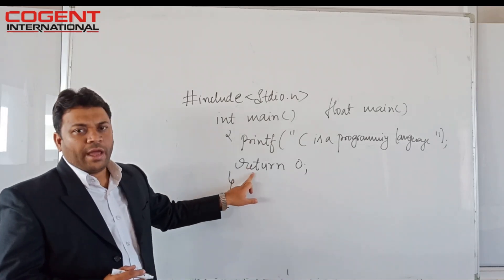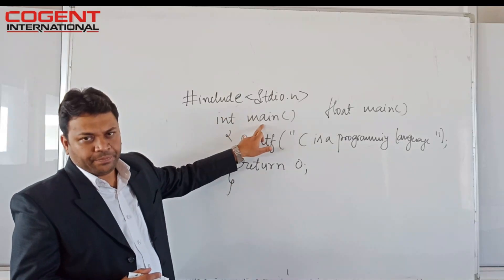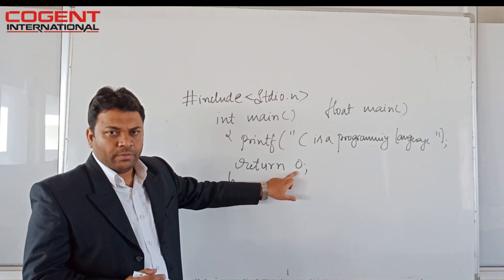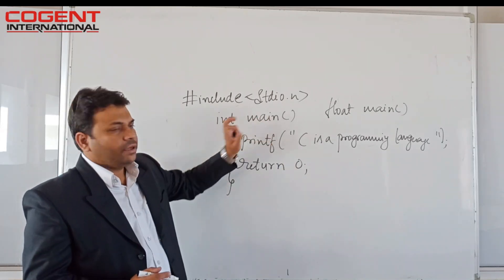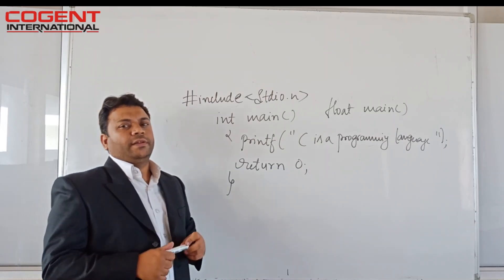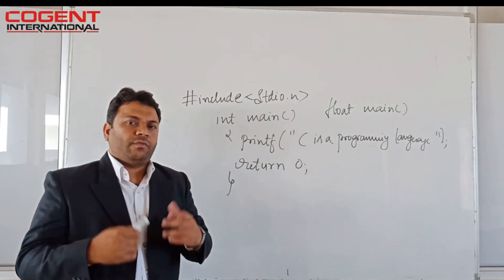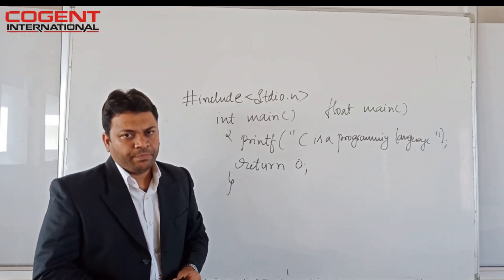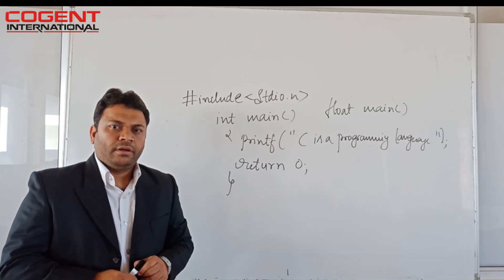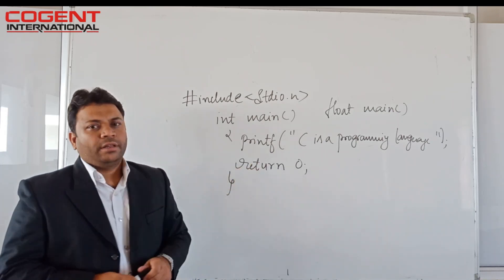Then I must return some value to this function. I am returning 0 — so 0 is returned to the main function. Each and every function in the C program must return a value. If void is used, it indicates no return value.